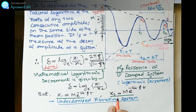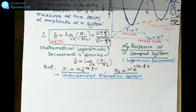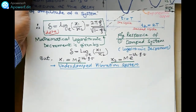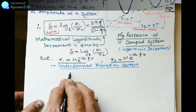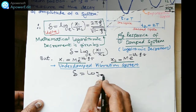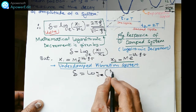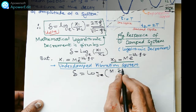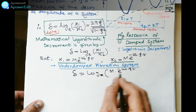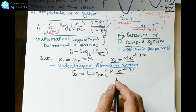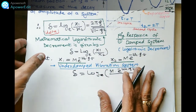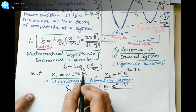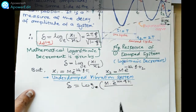Now we find the logarithmic decrement by substituting the values of x1 and x2 into the equation. δ = logₑ[M·e^(−ωn·ζ·t1) / M·e^(−ωn·ζ·t2)]. Here t1 corresponds to the time at x1 and t2 to the time at x2. The M terms cancel, and after simplification, δ = ωn·ζ·(t2 − t1).